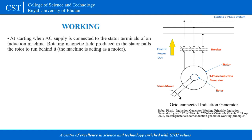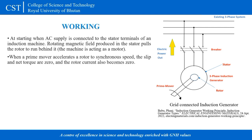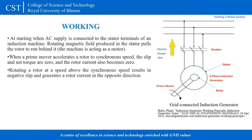At starting, when AC supply is connected to the stator terminals, a rotating magnetic field is produced in the stator that pulls the rotor to run behind it. When a prime mover accelerates the rotor to synchronous speed, the slip and induced torque become zero and the rotor current also becomes zero. Rotating the rotor above synchronous speed results in negative slip and generates a rotor current in the opposite direction.